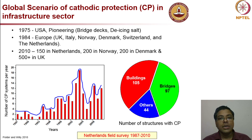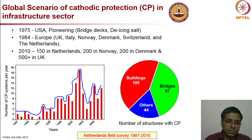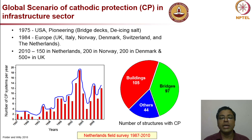Looking at the global scenario of cathodic protection in the infrastructure sector, the bar chart shows data from 1987 to about 2010. There is a significant increase in the number of CP systems installed. Some variations may reflect lack of data rather than reality. There is an increase in usage in the US, Europe, and Netherlands.